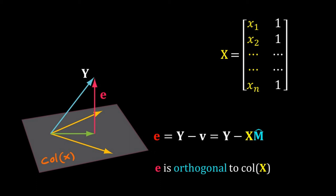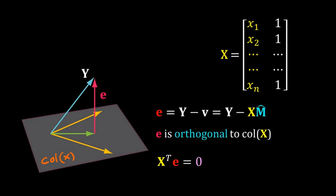Now I can do some linear algebra. The error vector e is orthogonal to the column space of X. So the dot product between any vector on the column space of X and e must be equal to 0. In other words, I can write X^T · e = 0. Replacing e by y − X·m̂, I get X^T · (y − X·m̂) = 0.